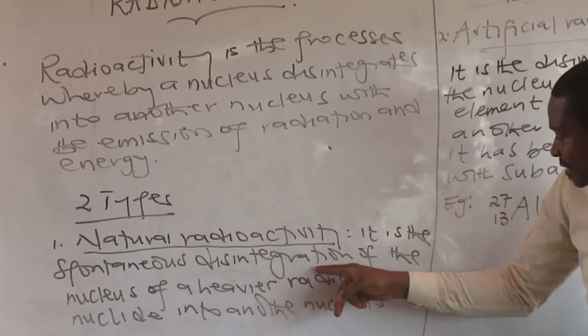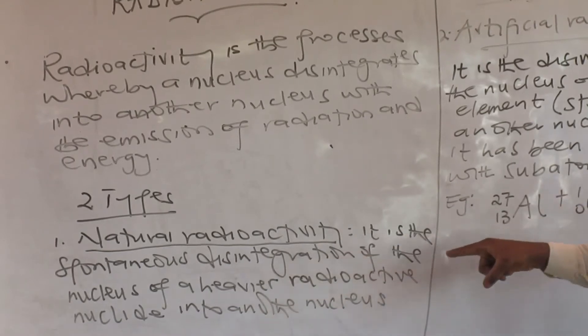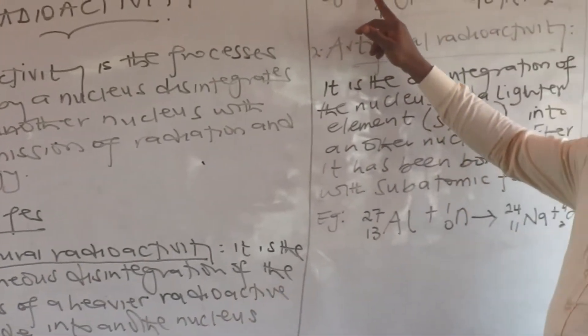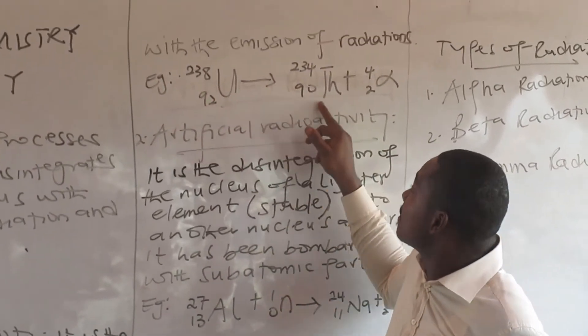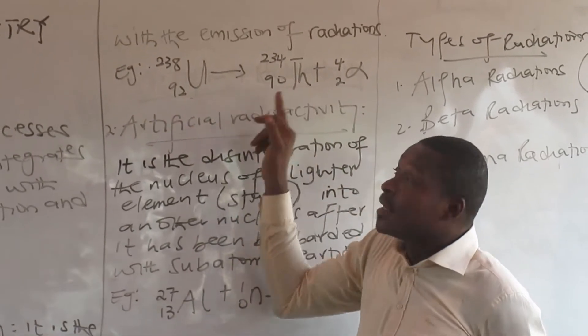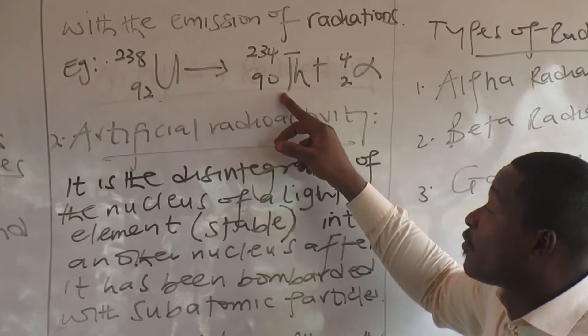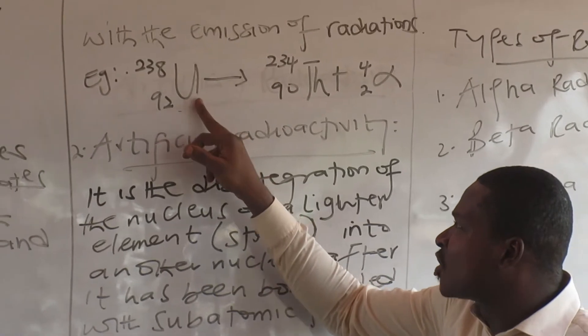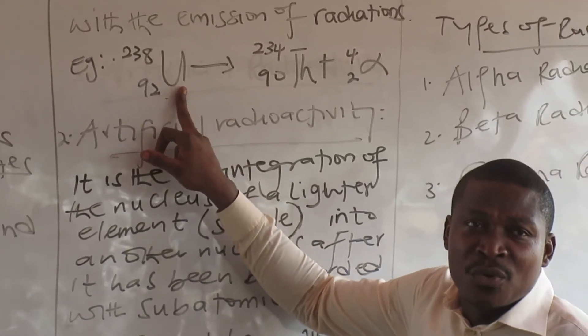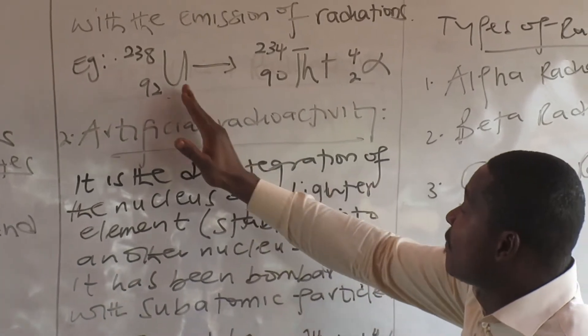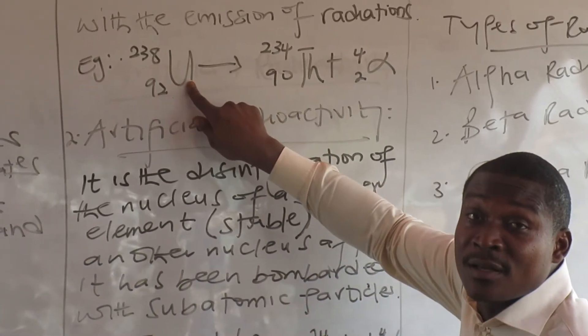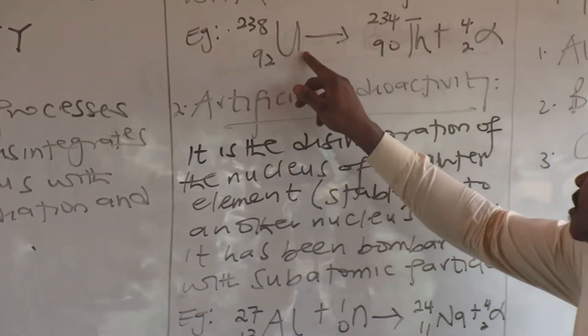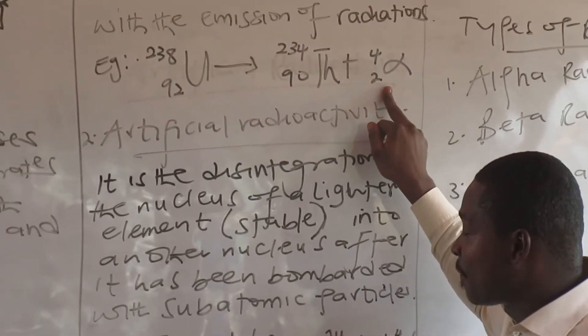So natural radioactivity is a spontaneous disintegration of the nucleus of a heavier radioactive nuclei, normally unstable nuclei, into another nucleus with the emission of radiations. Now there is an example, a typical example for natural radioactivity. That is uranium. It breaks down to form thorium and releases alpha particle. This is radiation. Now how would I tell that it is a natural radioactivity equation? In natural radioactivity, on the left, you always see the unstable nucleus. You don't see anything attached to it, as you see for artificial. Just this. It breaks to form thorium and this.